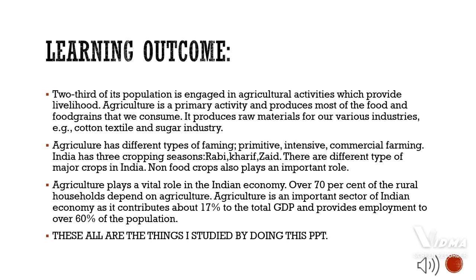First, I am going to say about the learning outcomes of agriculture. Two-thirds of its population is engaged in agriculture activities, which provide livelihood. Agriculture is the primary activity and produces most of the food and food grains that we consume. It produces raw materials for our various industries, such as the cotton textile and sugar industries.